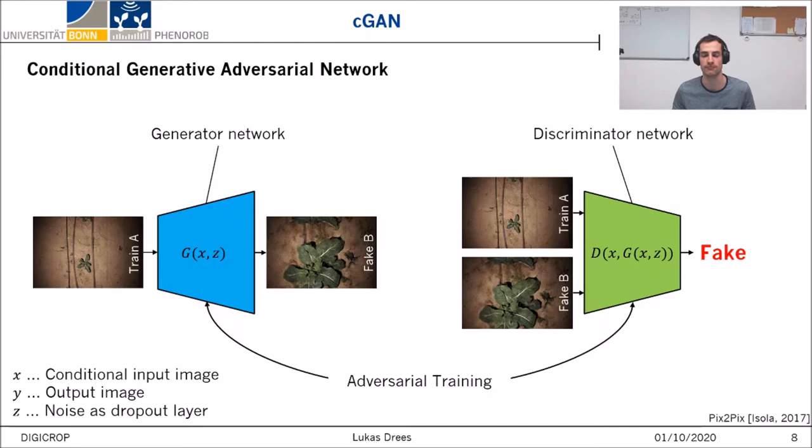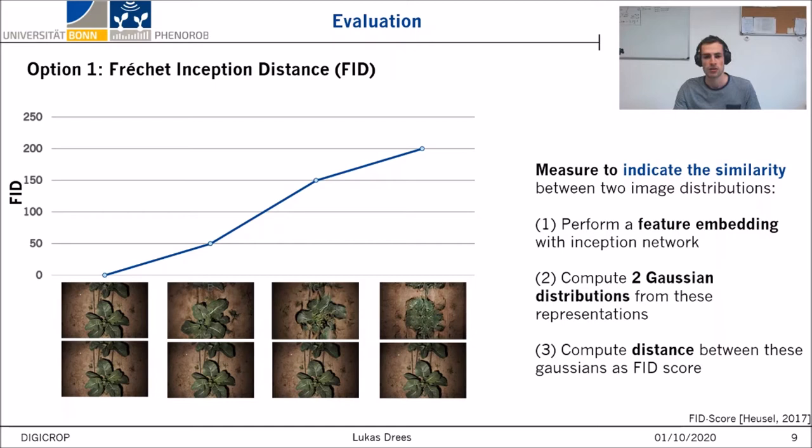Assuming we are now done with training, we can just look at the images and decide if they are good or bad, but this is very subjective. So we need to think about how to evaluate the fake images objectively. This is where the Fréchet Inception Distance comes into play. It basically compares the Gaussian distributions of embedded features of the input images. And as you can see in the graphic, the FID score is lower the more similar the image distributions are.